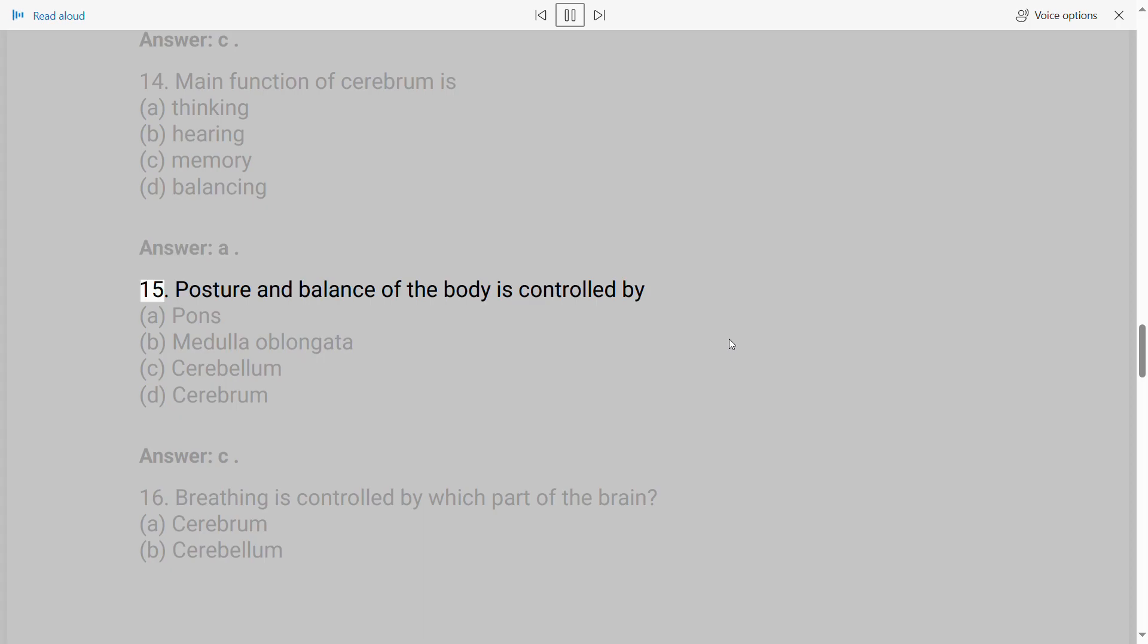15. Posture and balance of the body is controlled by A. Pons B. Medulla oblongata C. Cerebellum D. Cerebrum. Answer: C.